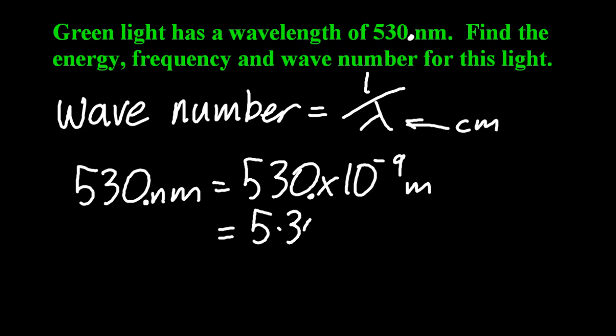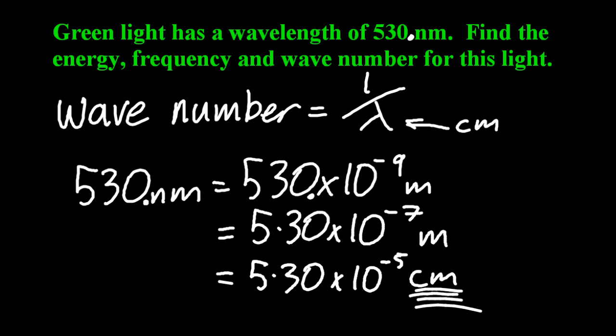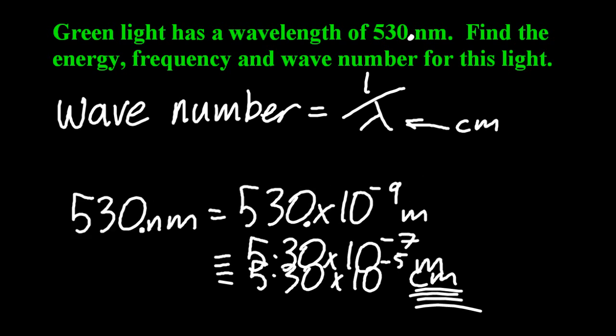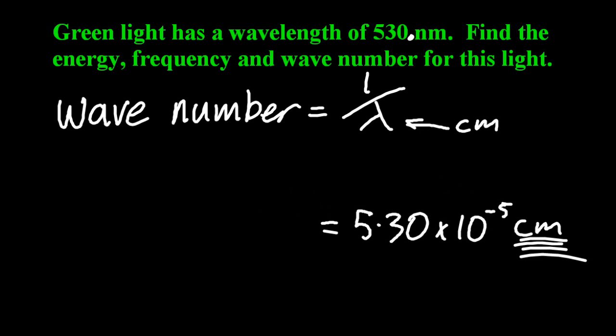I'm going to move it to scientific notation and then bring that to centimetres. OK, 5.30 times 10 to the minus 5 centimetres is the wavelength. Invert that. Three sig figs all the way through. So that's 18,900 per centimetre. Easy.